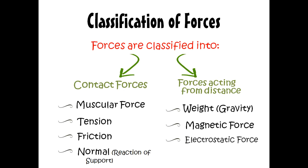The contact forces are: muscular force, which is the force exerted by the muscles; tension force, exerted by the spring, string, or rope; friction force, which is the force exerted by the rough surface on objects to slow them down; and the normal force, also called the reaction of support — the force exerted by the support, ground, table, or wall on objects to support them.